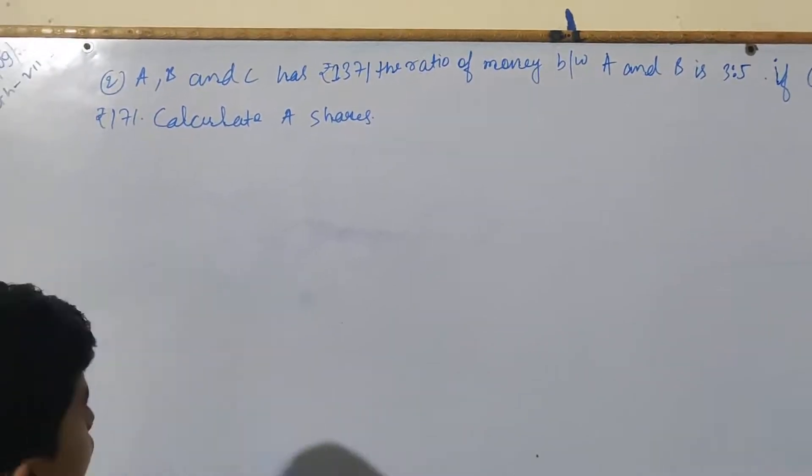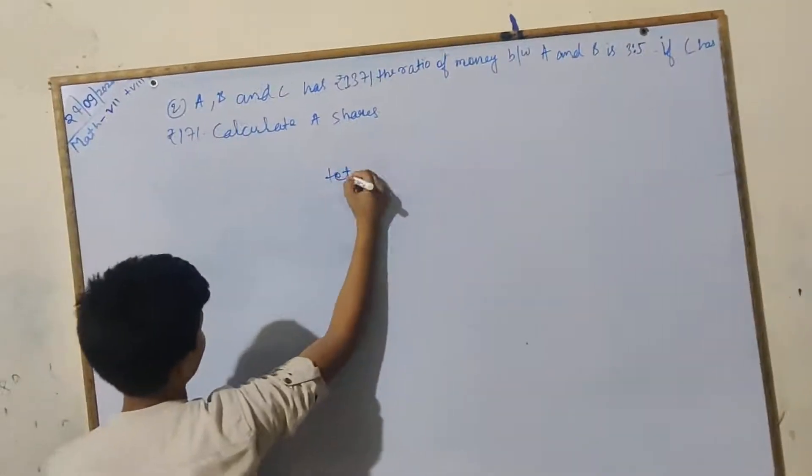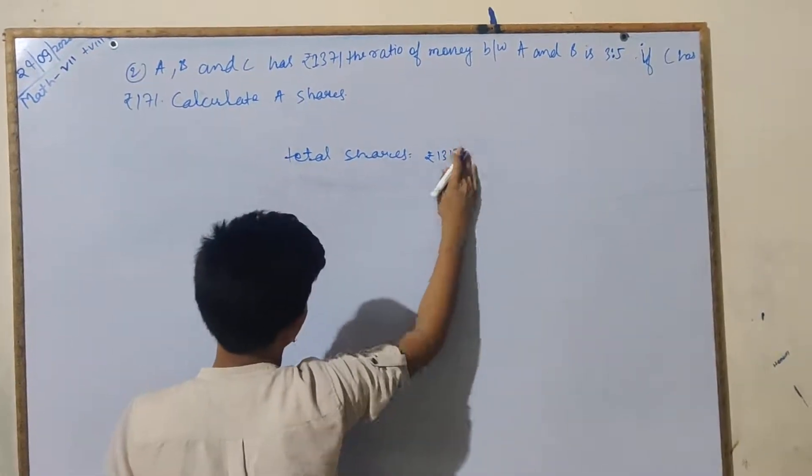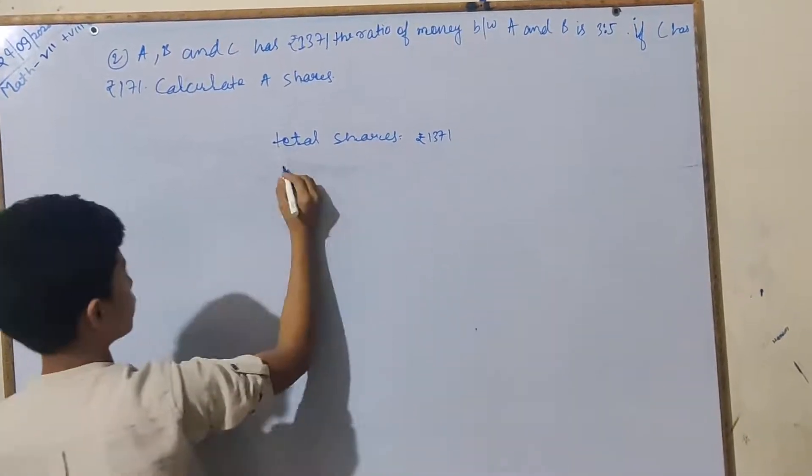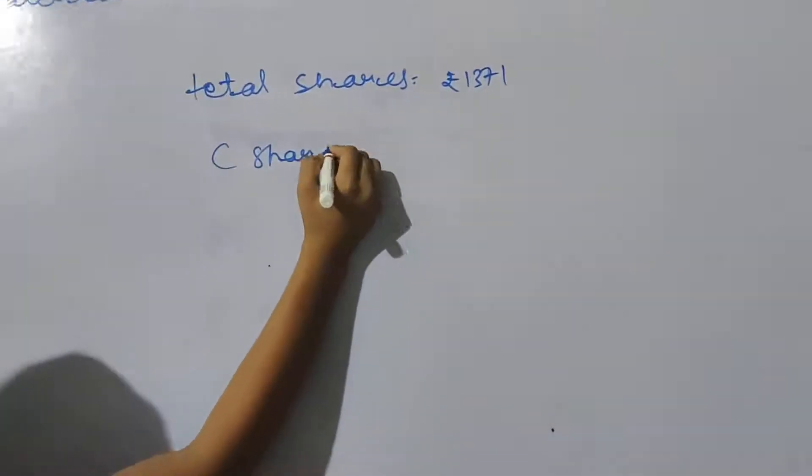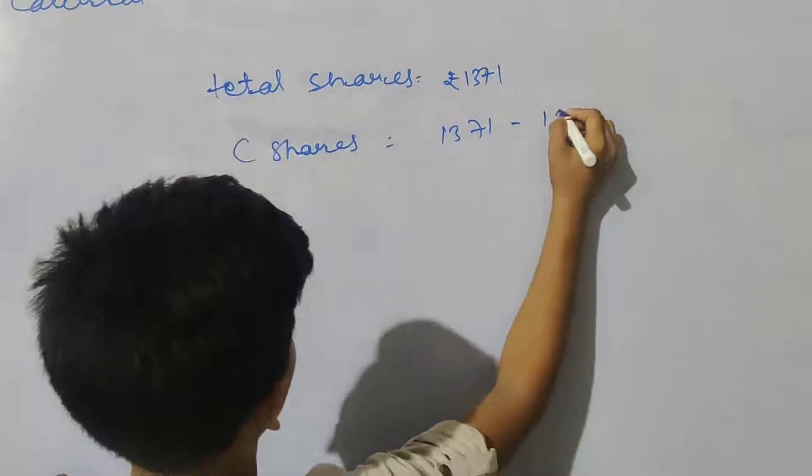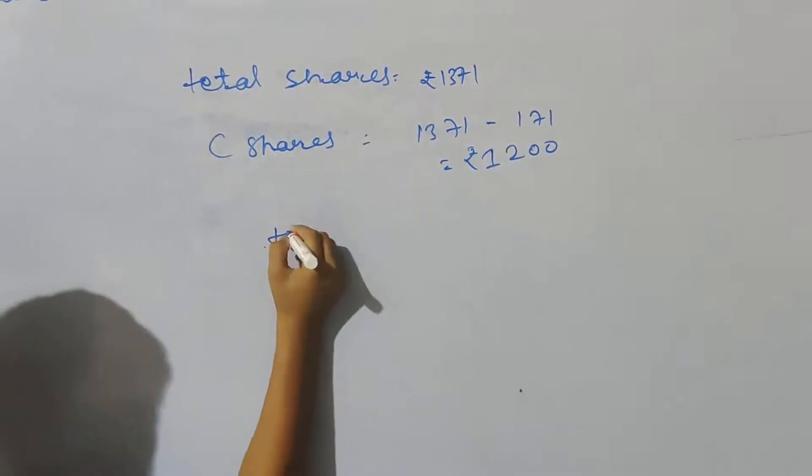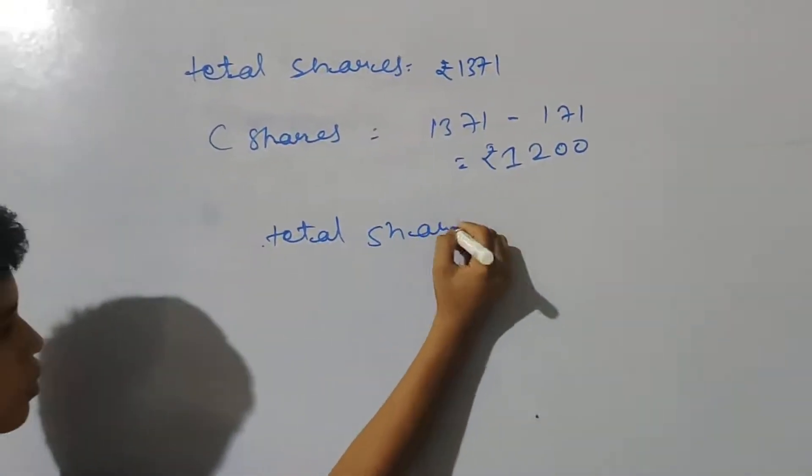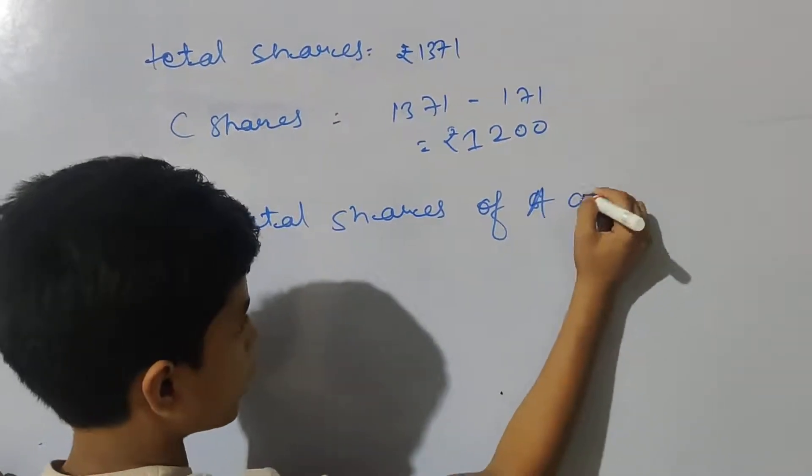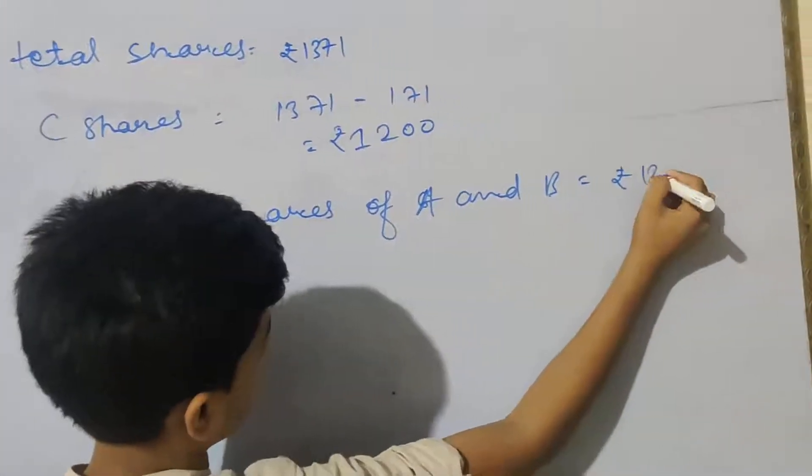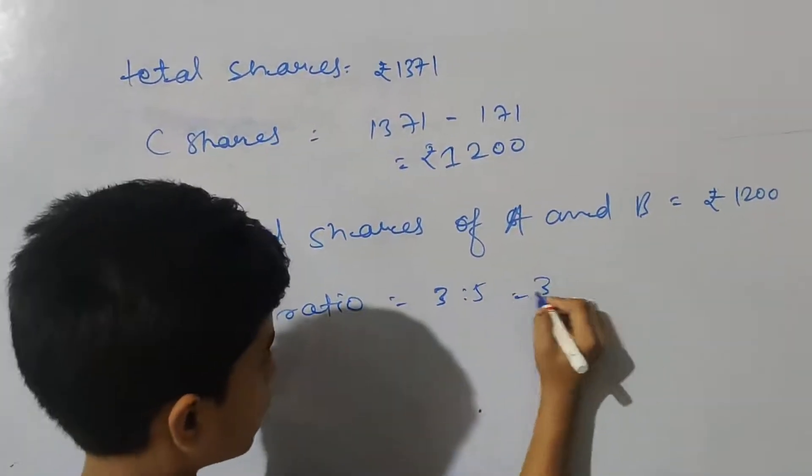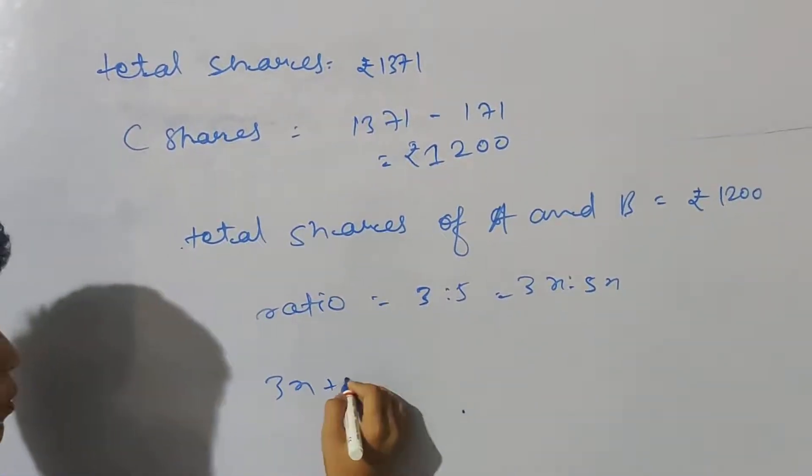Go to the next question. Question 2: A, B, and C has rupees 1371 in total. The ratio of money between A and B is 3:5. If C has rupees 171, calculate A's share. Total shares minus C's shares: 1371 minus 171 equals 1200 rupees.